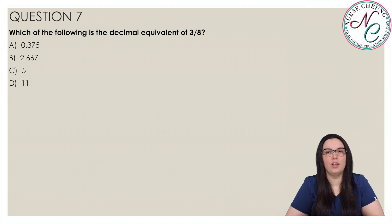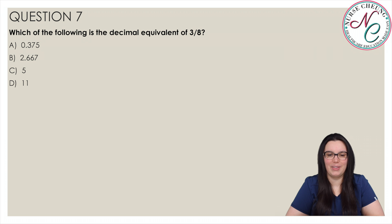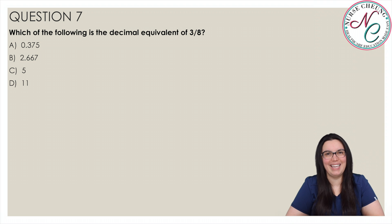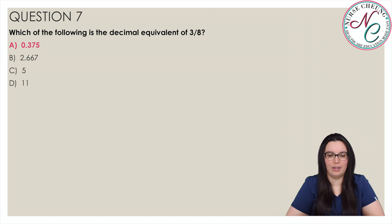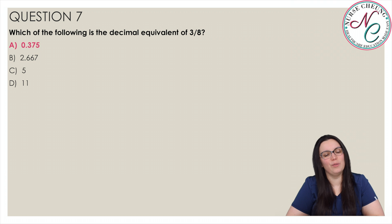Which of the following is the decimal equivalent to 3 over 8? Is it A, 0.375; B, 2.667; C, 5; or D, 11? The correct answer is A, 0.375. To convert a fraction to a decimal, we divide the numerator by the denominator: 3 divided by 8 is equal to 0.375.